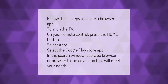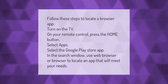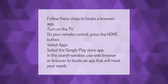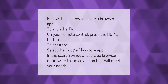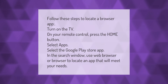Follow these steps to locate a browser app. Turn on the TV. On your remote control, press the home button. Select Apps, then select the Google Play Store app. In the search window, use 'web browser' or 'browser' to locate an app that will meet your needs.